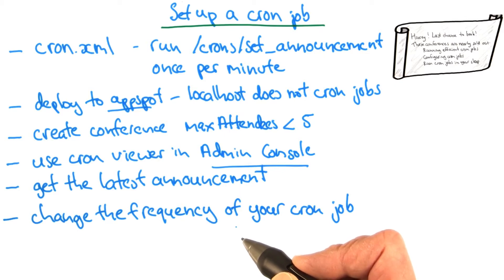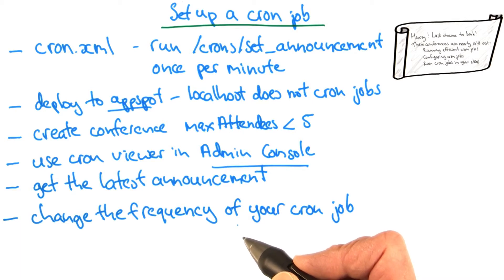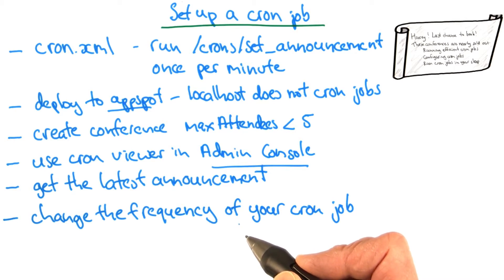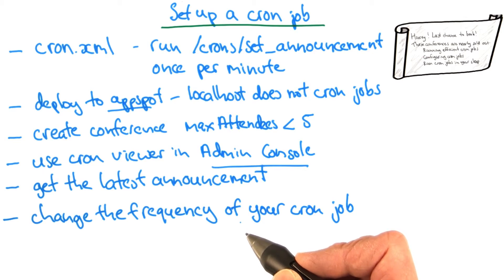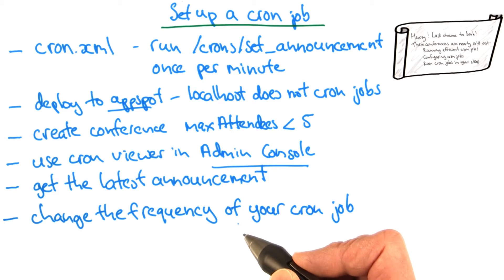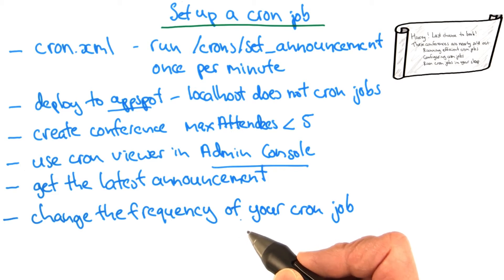This cron job does a fairly simple query and then puts a value in memcache, for which there's no daily quota. But if your cron job did something that intensively hit the data store, it could easily use up much more quota. So you need to think about what your cron jobs do and how often they need to run. I've accidentally used up my entire daily quota running a cron job that searched all the conferences and saved results in the data store — so I learned my lesson the hard way.